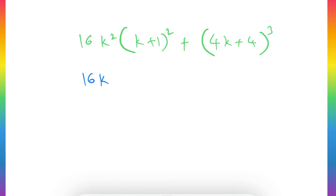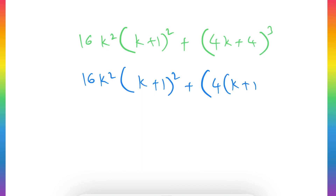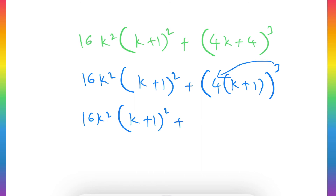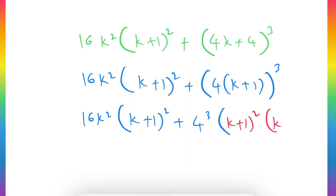Now simplifying: 16k²(k+1)² + (4k+4)³. Taking 4 common from (4k+4) gives 4(k+1), so (4k+4)³ = 4³(k+1)³ = 64(k+1)³. We rewrite (k+1)³ as (k+1)²·(k+1) so that we can factor out (k+1)² from both terms.